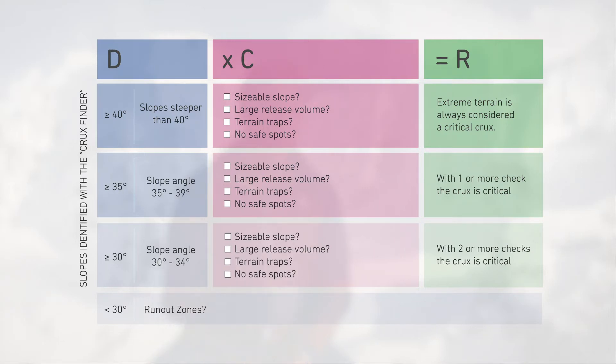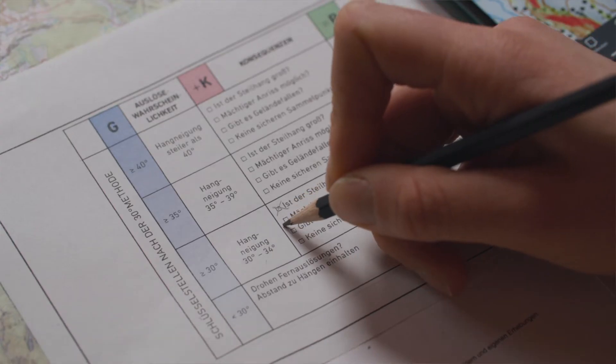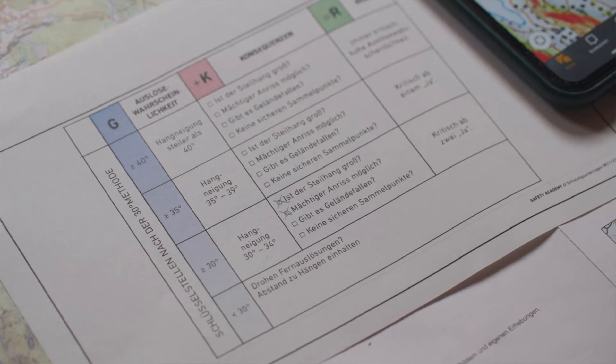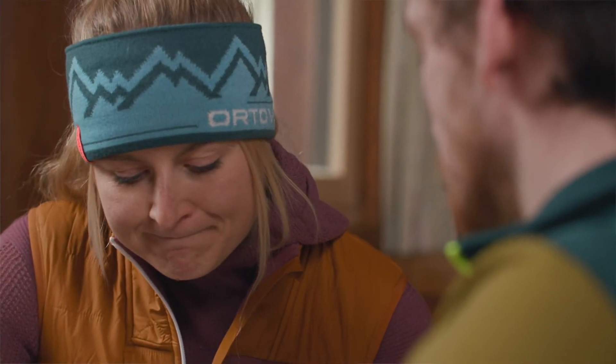Finally, we ask what the consequences of each danger class will be. These four questions are easier to answer and link the danger with the possible consequences to provide the risk.